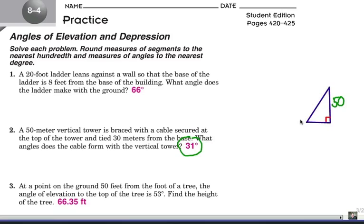Now this is the cable here, that's the hypotenuse of that right triangle, and it's tied 30 meters from the base of the tower. So that leg right there is 30. What angle does the cable form with the vertical tower? That's actually this angle right here. The angle of the cable with the vertical tower. So this is our reference angle here, x.